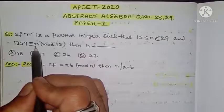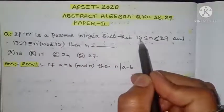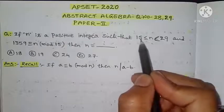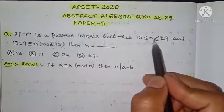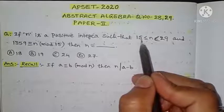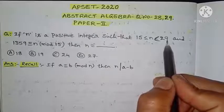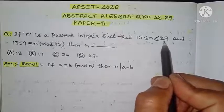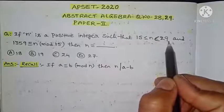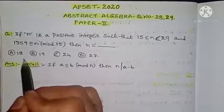The question is about finding the number n such that 1359 is congruent to n modulo 15, where n lies between 15 and 29. Here 15 is less than or equal to n, so the possibilities for n are 15, 16, 17, 18, 19, and up to 28, because n value is strictly less than 29. So we go through the options.